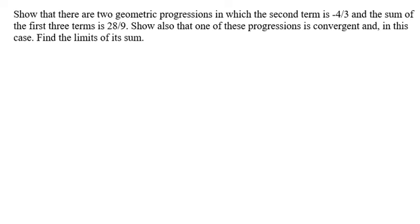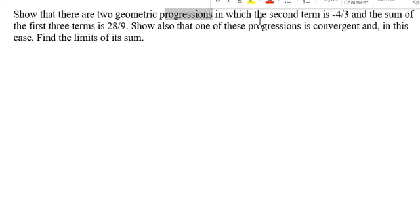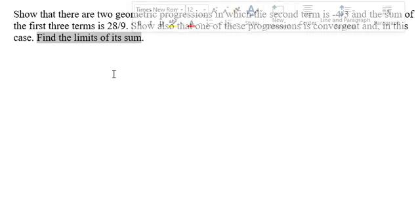Hello everybody. Today I want to talk about algebra. The topic is geometric progressions. We need to show that there are two geometric progressions in which the second term is negative 4 over 3 and the sum of the first three terms is 28 over 9. We also need to show that one of these progressions is convergent and find the limit of its sum.